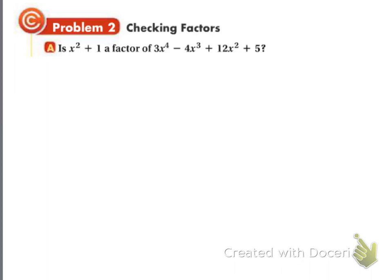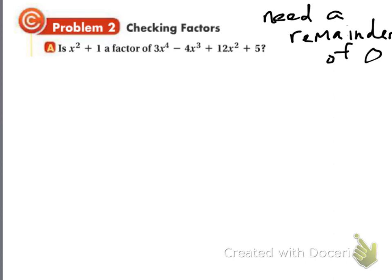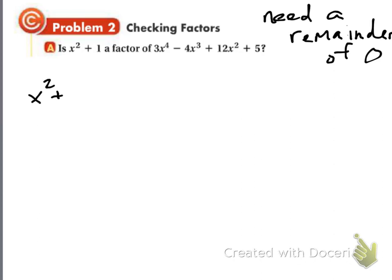Problem 2 says: is x squared plus 1 a factor of the given polynomial? Here's what we're looking for — we need a remainder of 0. If we do long division and we get a remainder of 0 at the end, then x squared plus 1 is a factor. If we get anything other than 0, then x squared plus 1 is not a factor. So we're going to do long division with x squared plus 1 as the divisor. I need to leave room on the top — it's been a while since I've done long division.